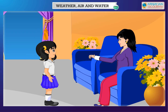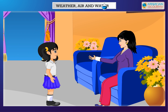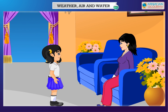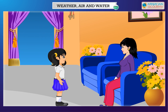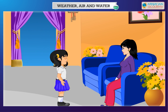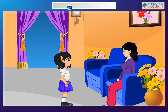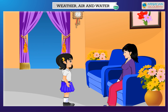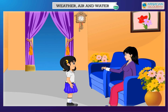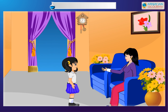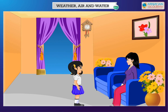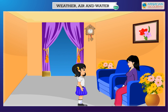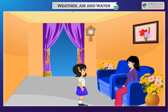Weather is an important part of our lives and one that we cannot control. Instead, the weather often controls how and where we live, what we do, what we wear, and what we eat. The sun, wind, the clouds and the rain are all factors that can cause changes in the weather.